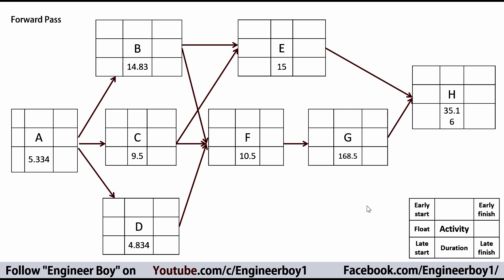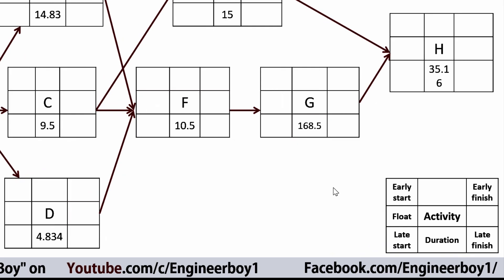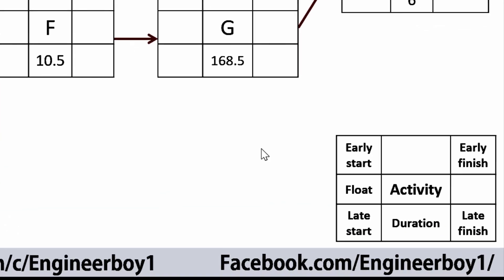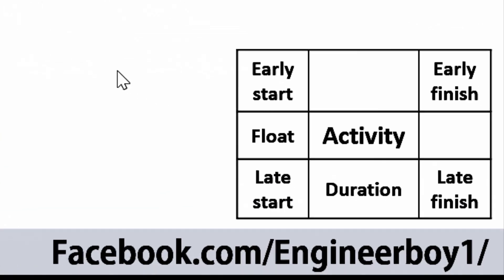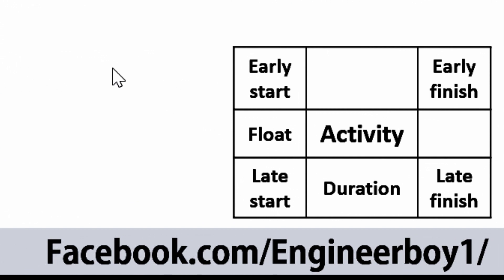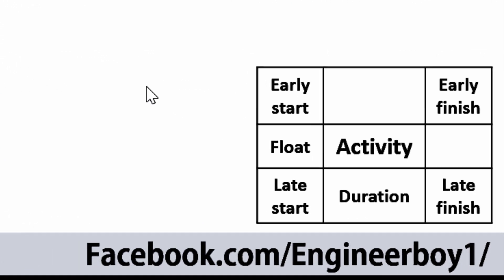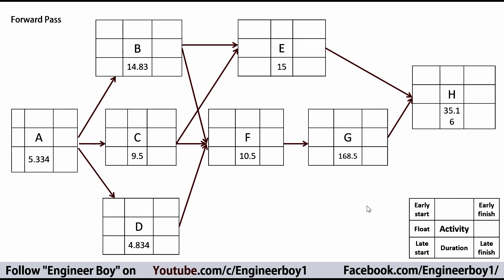Now I'm going to calculate the forward pass. For this approach I'll use the annotation: early start, early finish, late start, and late finish. The center boxes are the activities like A, B, C, D, and below them are the durations — these are the mean durations.